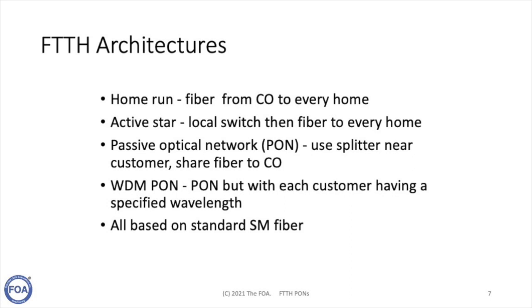Fiber to the home has a number of architecture options. There's a simple home run, where you run fiber from the central office to every home. There's an active star, where you have a local switch connecting users over short lengths of fiber. But the most popular system today is a passive optical network — what we call a PON — which uses optical splitters near the customers to share the fiber to the central office. PON uses wavelength division multiplexing. All PON structures are based on simple, inexpensive, single-mode fiber and use installation techniques familiar to most installers, which is part of what's made it so popular.